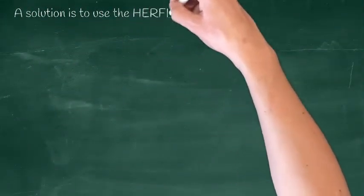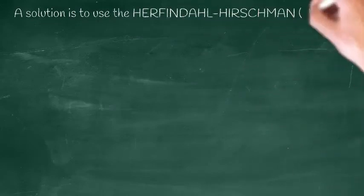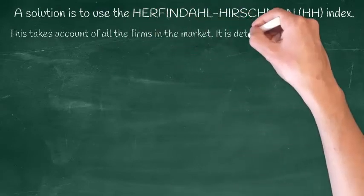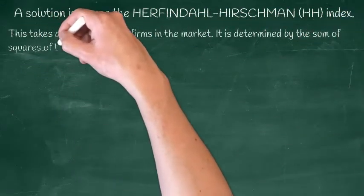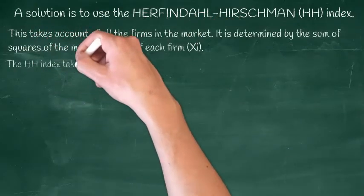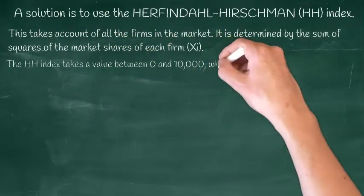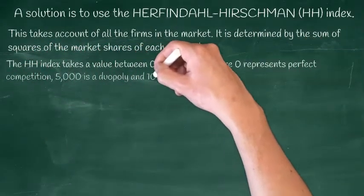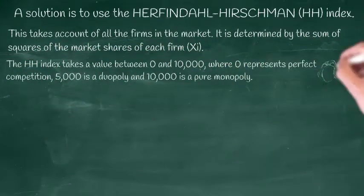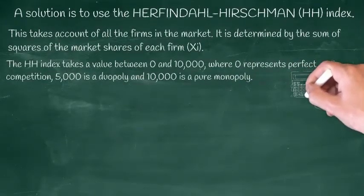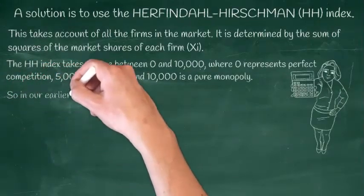Fortunately, economists have sought to resolve this problem by instead using the market shares of each firm in the market and calculating a Herfindahl index. This involves squaring the market share of each firm and calculating their sum. The Herfindahl takes a value between 0 and 10,000, where 0 represents perfect competition, 5,000 is a duopoly, and 10,000 is a pure monopoly.